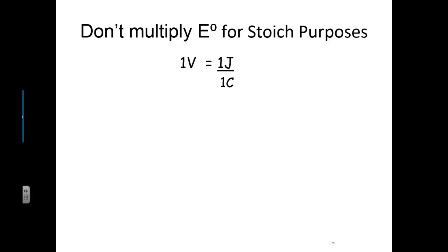In this podcast we're going to try a bunch of problems where we're figuring out cell potential and drawing galvanic cells. One important thing that seems a little strange at first is that when we are balancing the redox reaction, sometimes we have to multiply to get the electrons to balance, but we do not change the amount of voltage if we change the coefficient on the balanced equation.